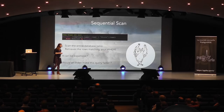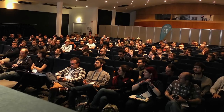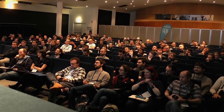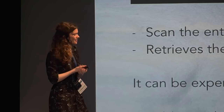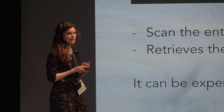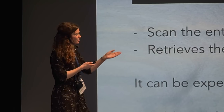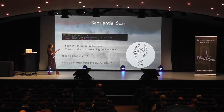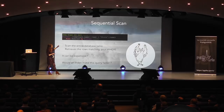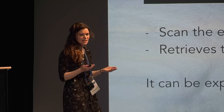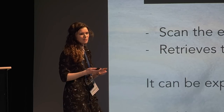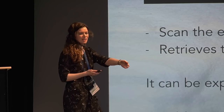A sequential scan reads the entire table row by row and filters what it needs. It can be really slow because it has to read everything. In the example, it removed 10,001 rows by filter to retrieve only one — it's like reading an entire book when you only want something on page 10.